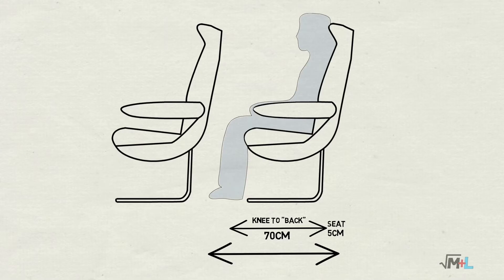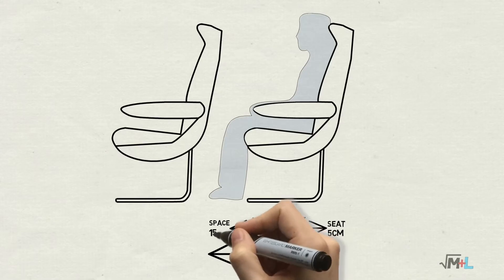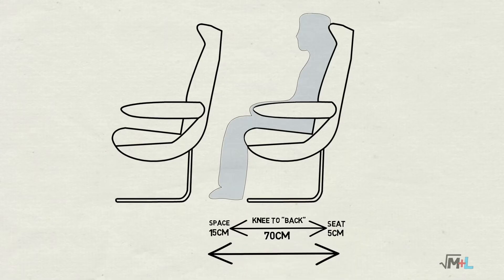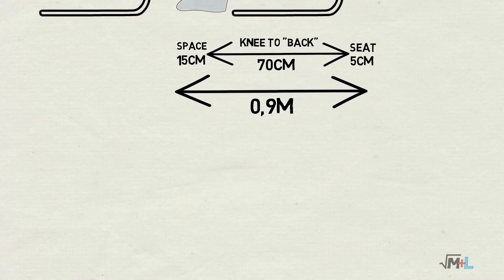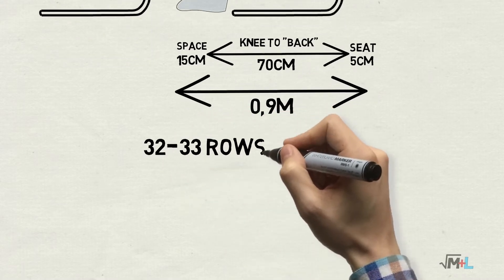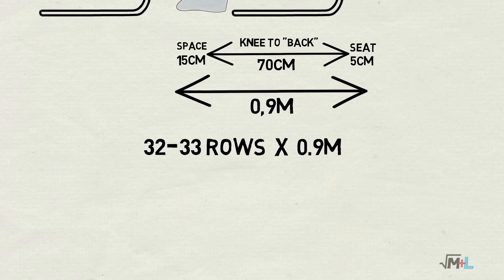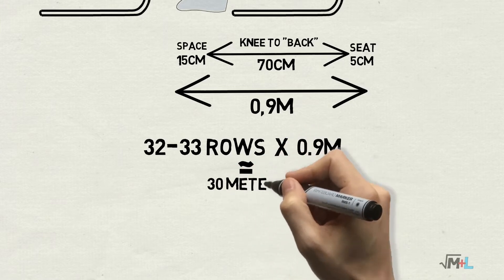And finally, try to recall the space you have left from your knees to the next seat. What could fit in there? A book? Bottle? Bag? For me it was around 15 centimeters. So I got total width of the row as just under 1 meter, around 90 centimeters, as a result of 5 to 10 plus 70 plus 15. Because I have just above 30 rows, so again I simplified by calculating 30 rows times 1 meter, resulting in 30 meters.